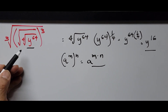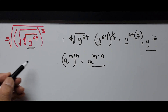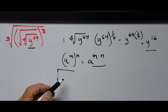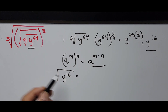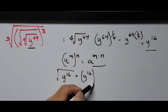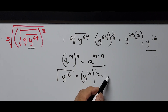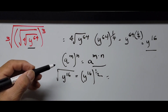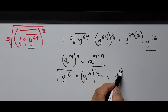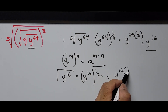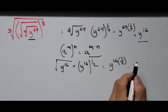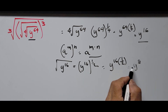Now we're doing the square root. We have the square root of y to the 16th power, which equals y to the 16th power raised to the 1/2. Using the same power rule, that means y raised to 16 multiplied by one half, which is 16 divided by 2, giving us y raised to the 8th power.